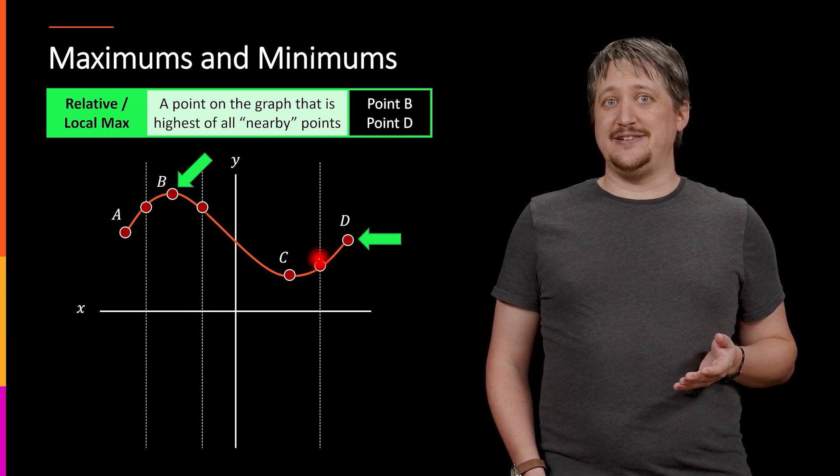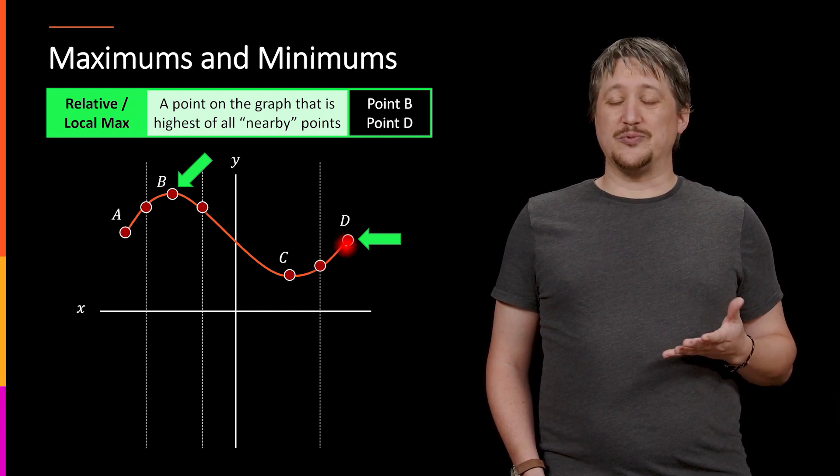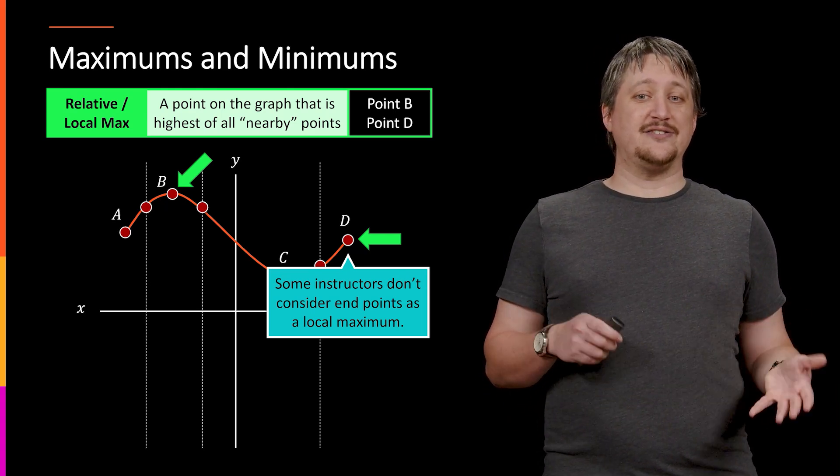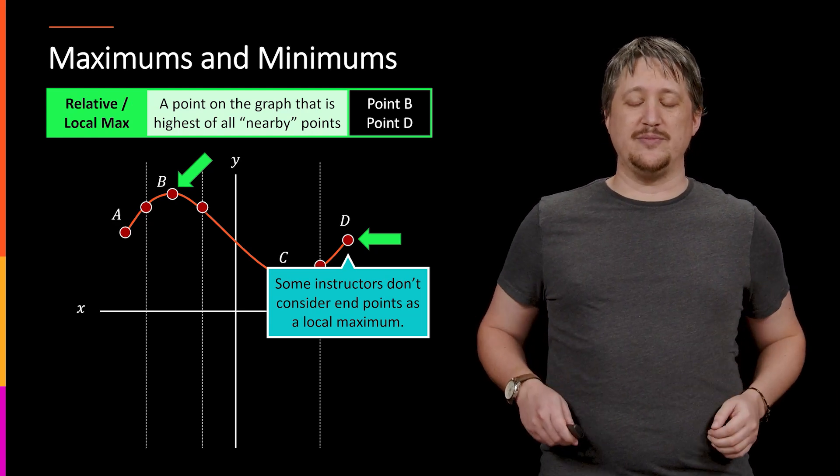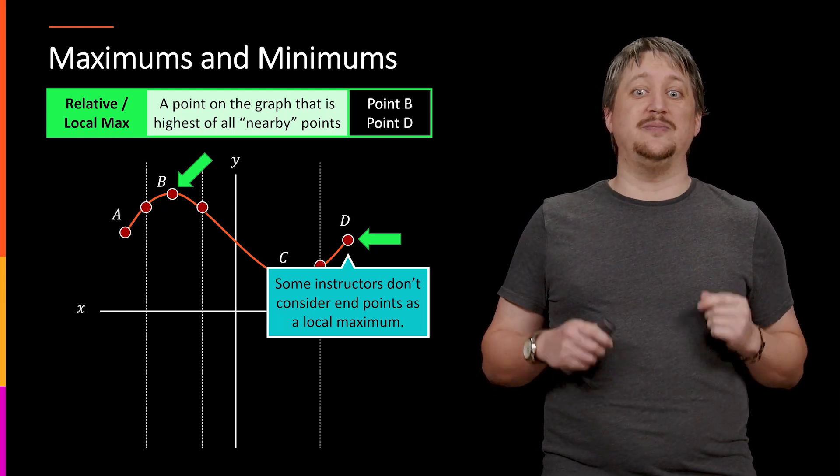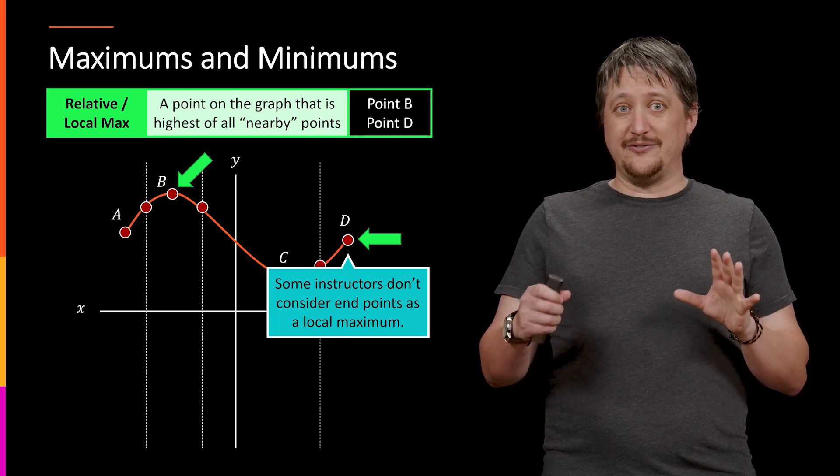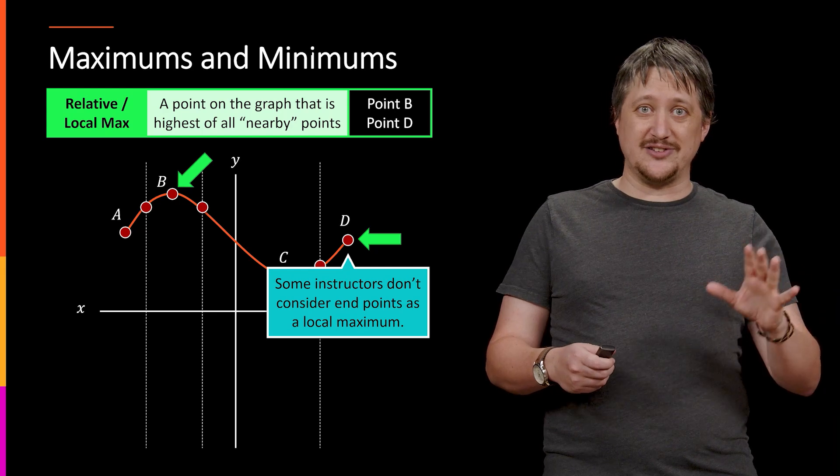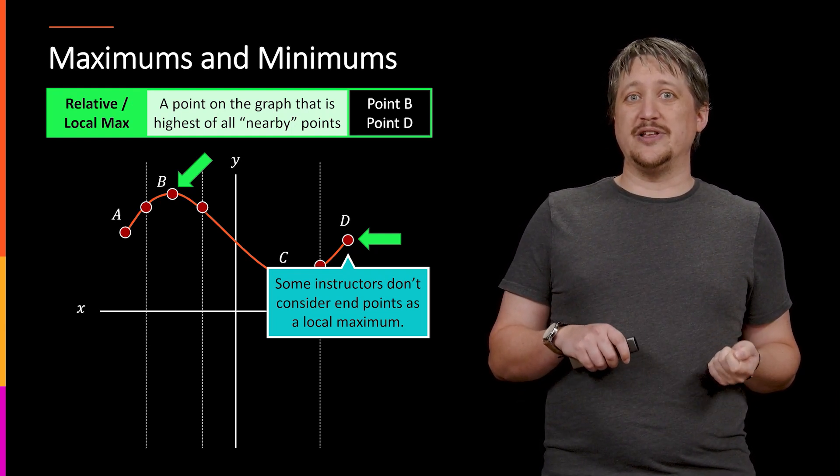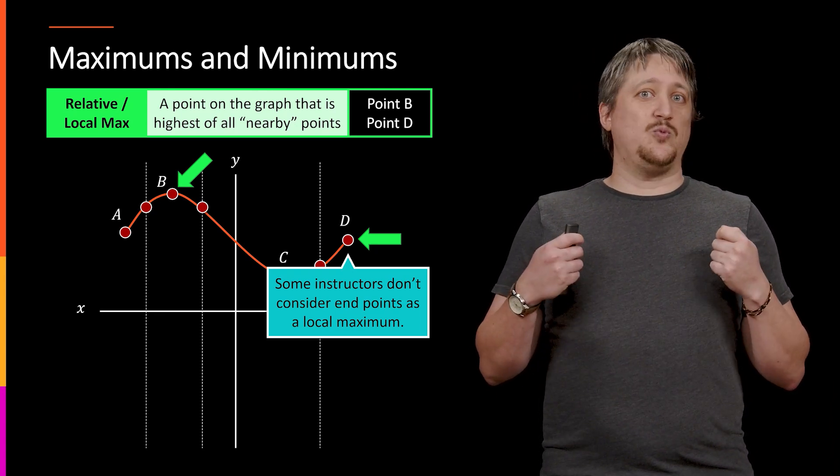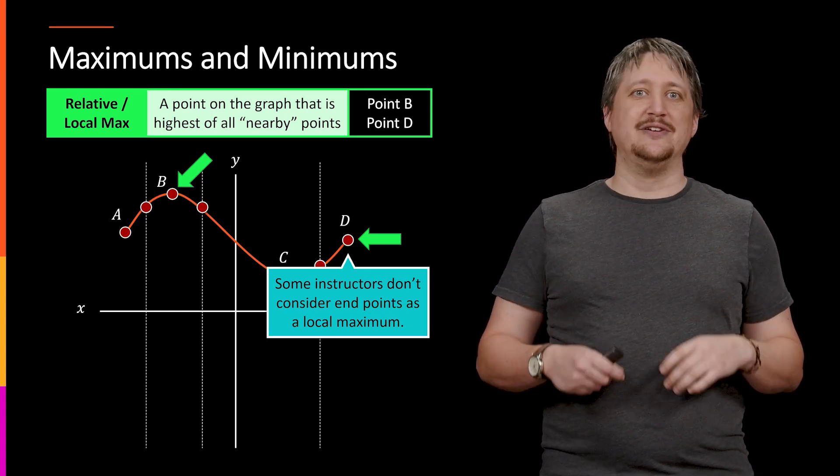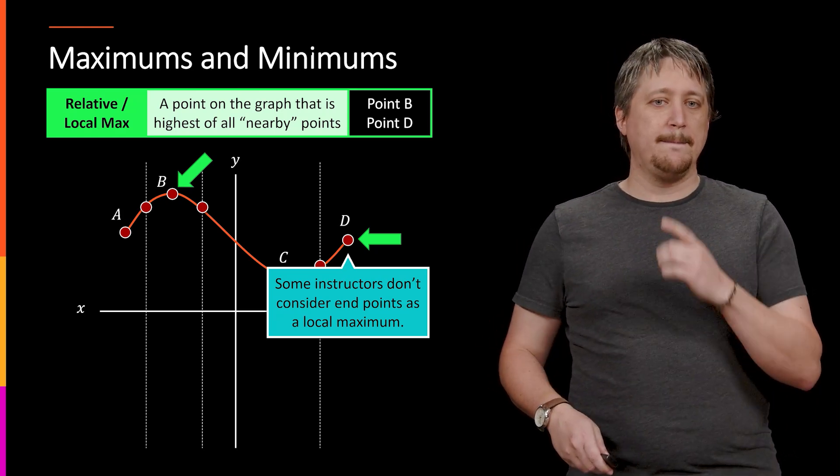And so for D, it's arguable whether or not this would count because to the right of it, nothing exists. So some instructors don't consider endpoints of a graph as a local maximum or minimum. They don't count them as local extrema. To be explicitly clear, in this class, we will. Unless whoever is teaching it, if it's not me, says otherwise, we will always assume that the endpoints are local extrema. There's a whole lot of deep math going on about whether or not you want to count these things. And it has to do with topology, which is like a senior level math major course. Some people consider these things relative or local maxes when they're on the end. Some people do not. When in doubt, ask your instructor which one they adhere to and go with that. For me, I'm counting them.